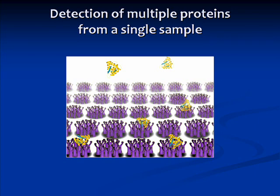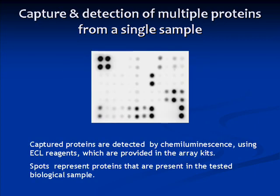Detecting multiple related proteins allows scientists to have a global perspective of signaling events occurring in a disease state, or perhaps in response to a therapeutic treatment. This is an example of the output of a membrane-based antibody array. Each spot on the membrane indicates the presence of a different cytokine. Notice that each antibody is spotted in duplicate.